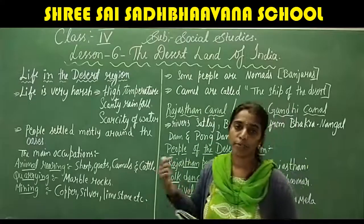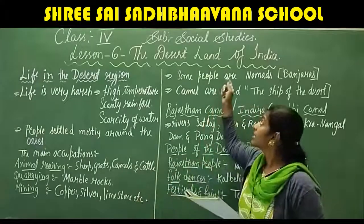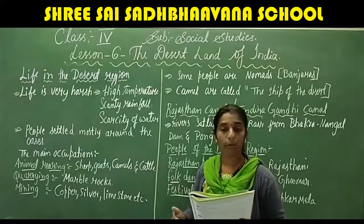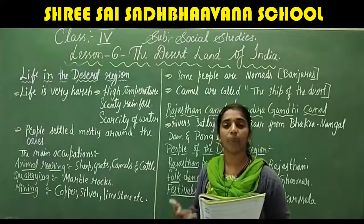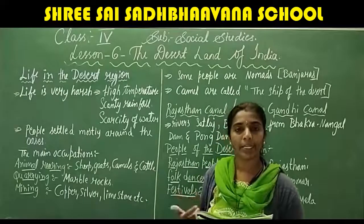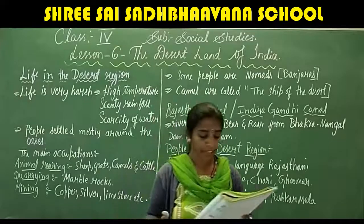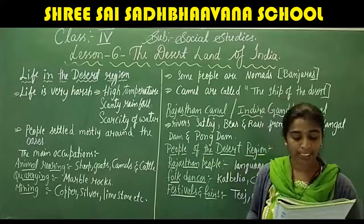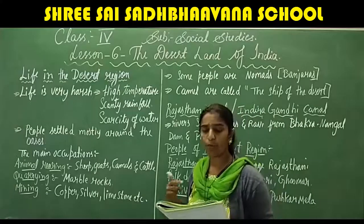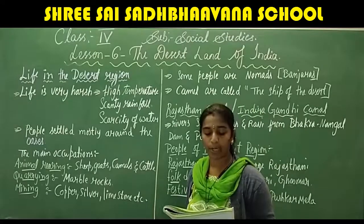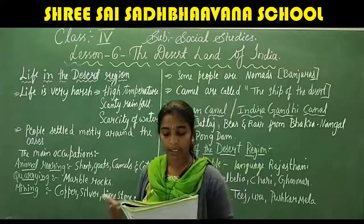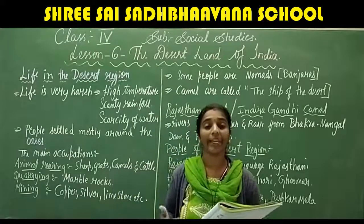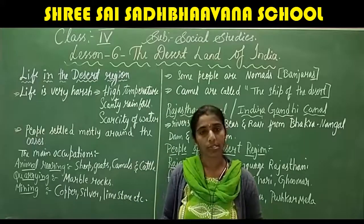Now let us study about the importance of the Great Indian Desert. The state of Rajasthan was ruled by the famous Rajputs called Ranas. These kings built numerous forts at Jaipur, Udaipur, Jodhpur, Chittorgarh, and Ajmer, which are of great attraction to tourists from across the world.